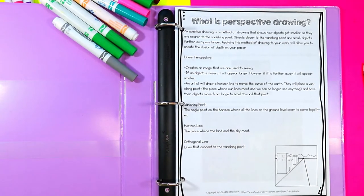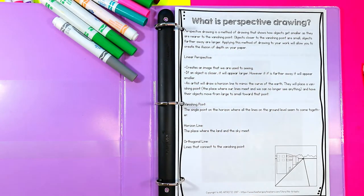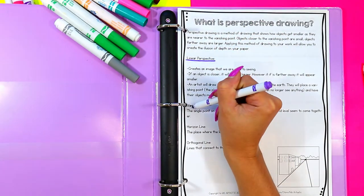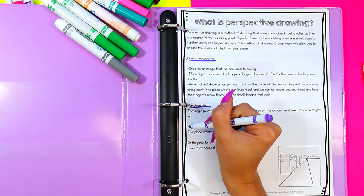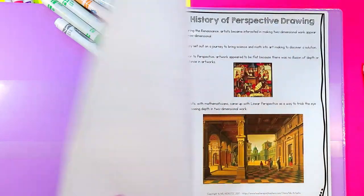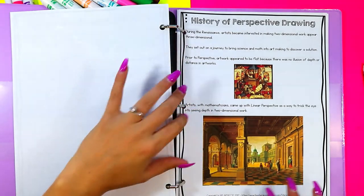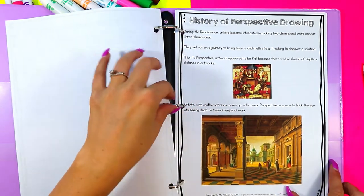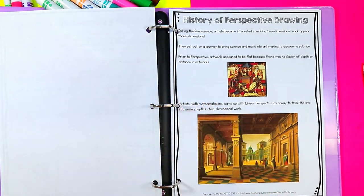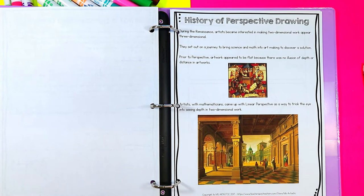Alright, so we're just going to take a look at some of the pages in this resource. The first one is what is perspective? It goes over what perspective is including linear perspective, what a vanishing point is, the horizon line, orthogonal lines, all those details. It also goes into the history of perspective drawing, talking about the Renaissance and how artists were interested in making two dimensional work appear three dimensional so they set out on a journey to bring science and math into art making to discover a solution.